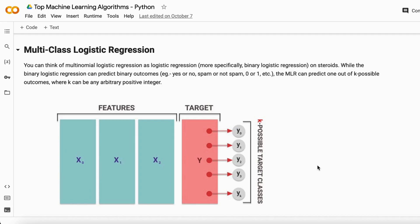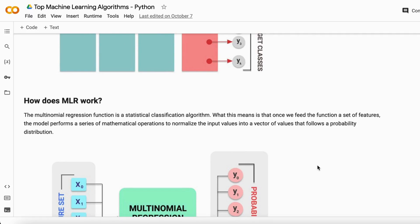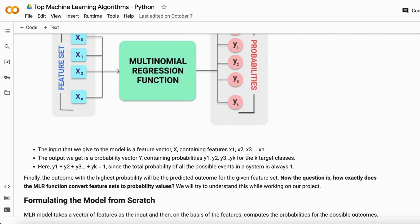So how does MLR actually work? It works the same as logistic regression. You feed the input features to the model, then it does mathematical calculations and normalizes the input, giving you the probability distribution of each label in your target variable. It will give you multiple probabilities, but all probabilities sum up to one.